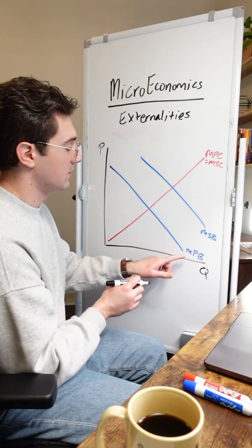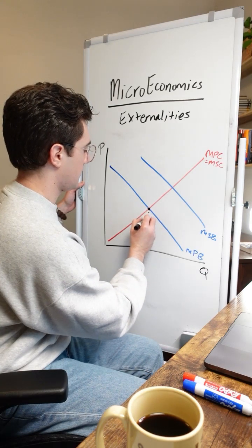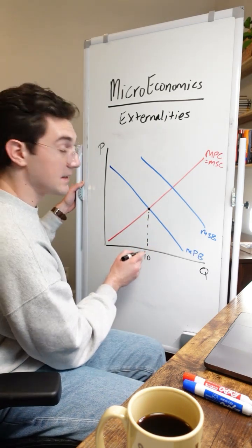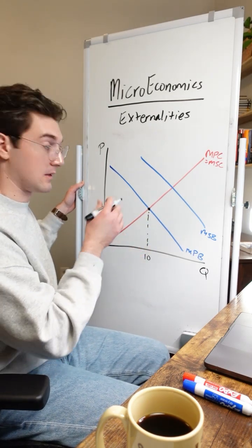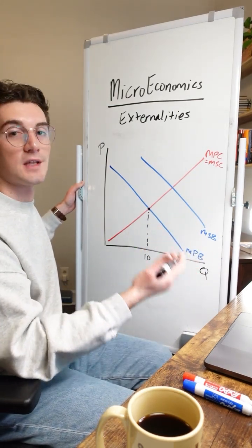For private market, look at the intersection of the marginal private benefit and the marginal private cost curves. That's going to happen right here at, we'll say, 10 units. This is the output that the private market is going to operate at without considering external costs or benefits falling on third parties or society.